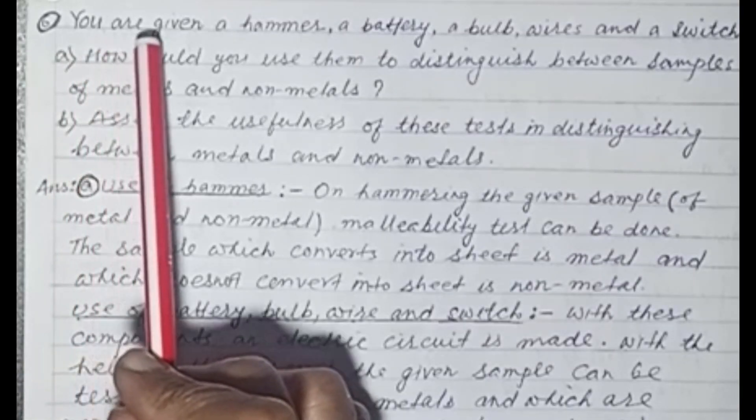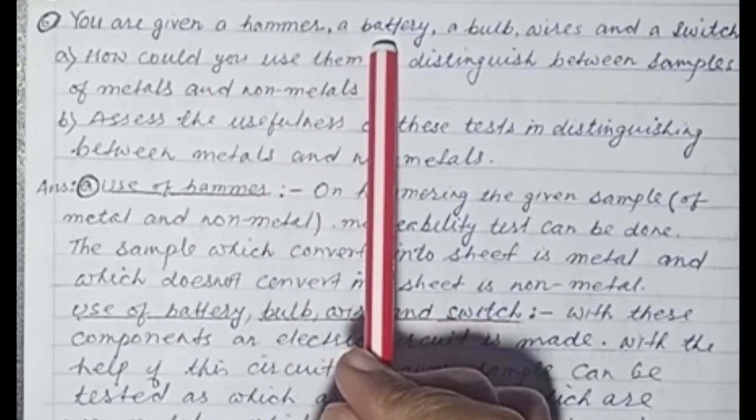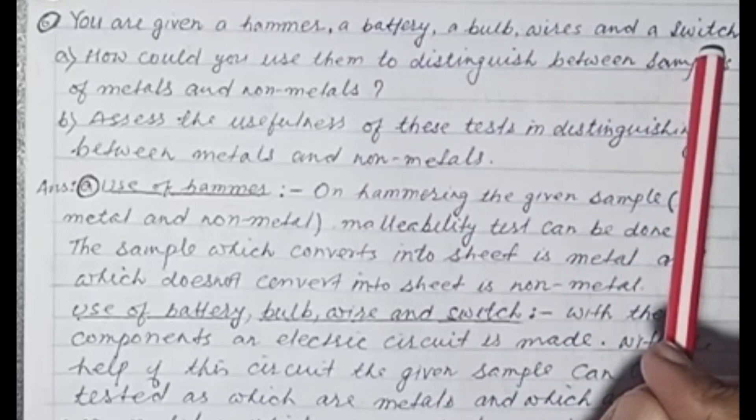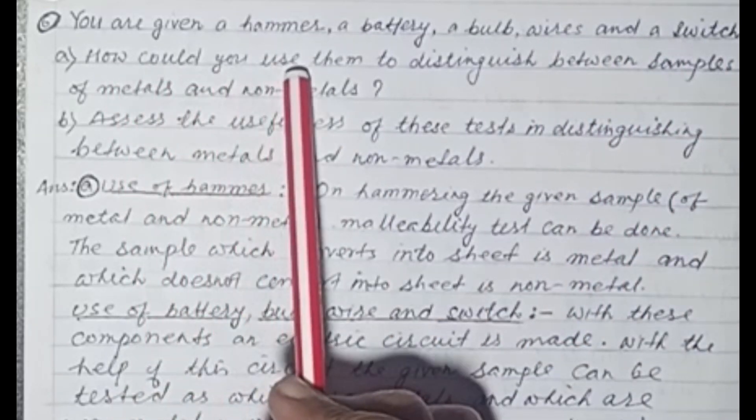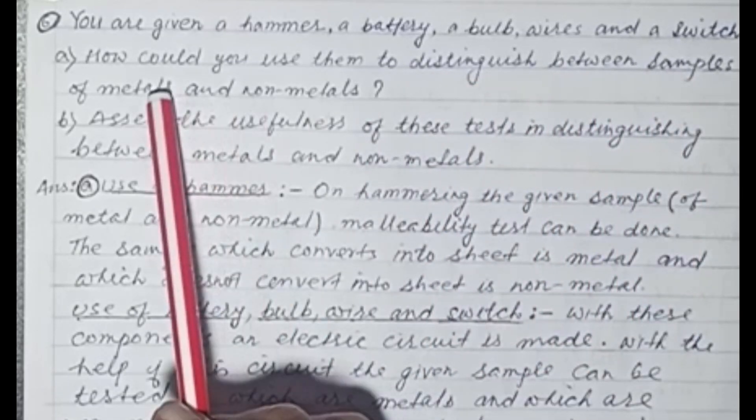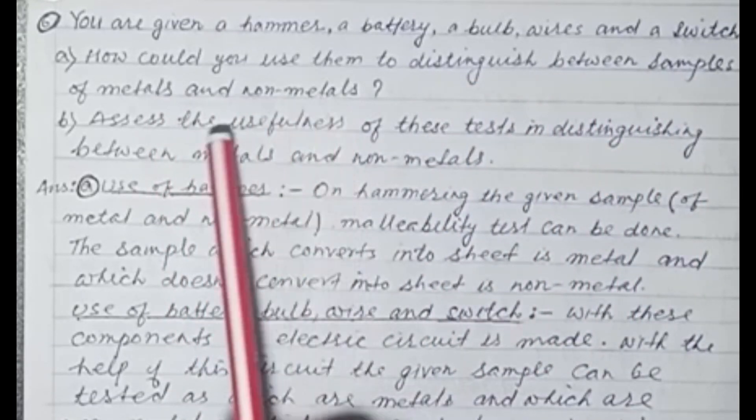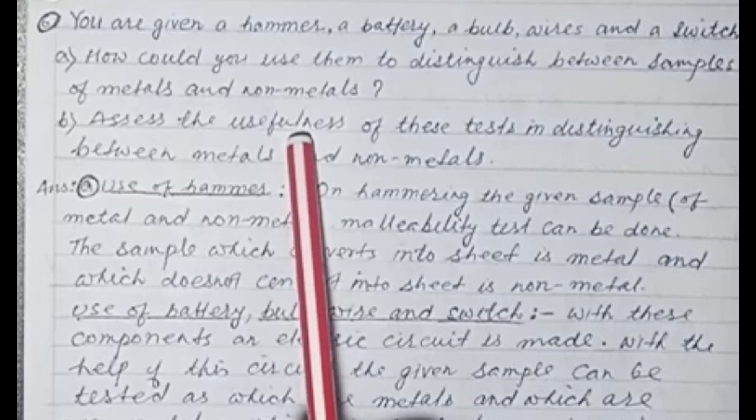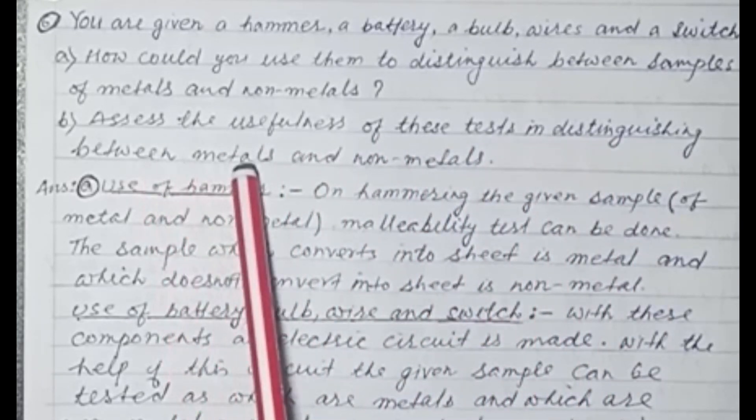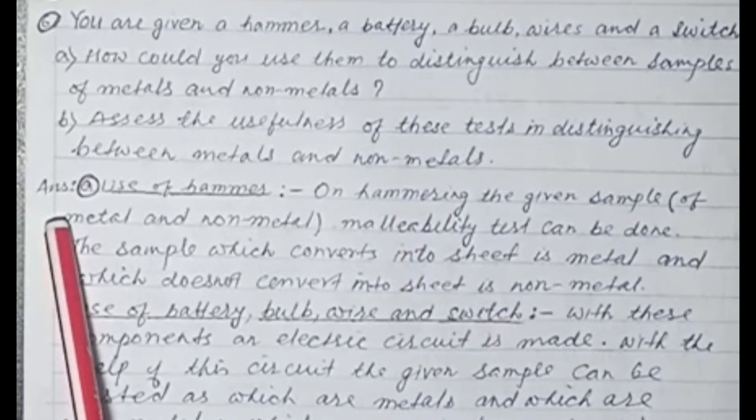You are given a hammer, a battery, a bulb, wires and a switch. How could you use them to distinguish between samples of metals and non-metals? Assess the usefulness of these tests in distinguishing between metals and non-metals. Answer A: